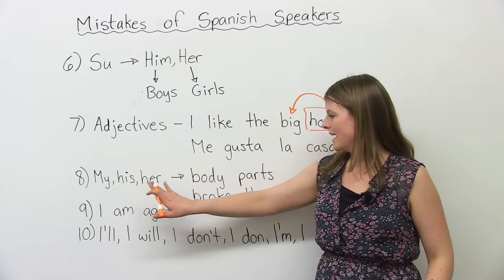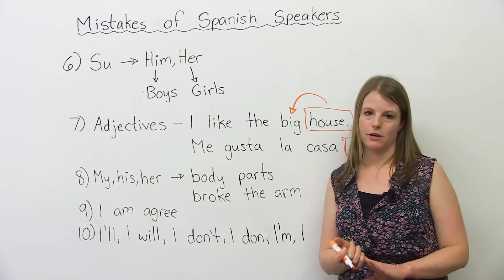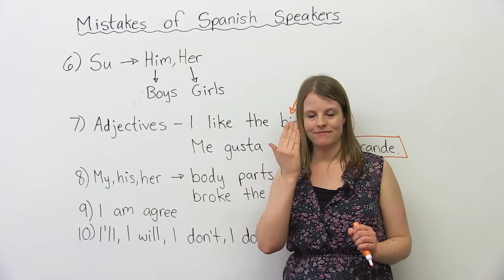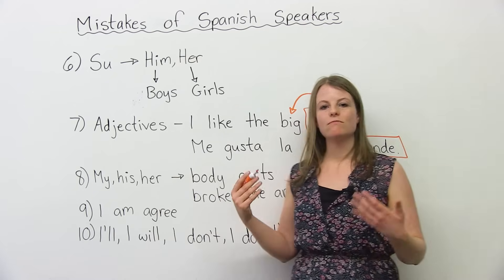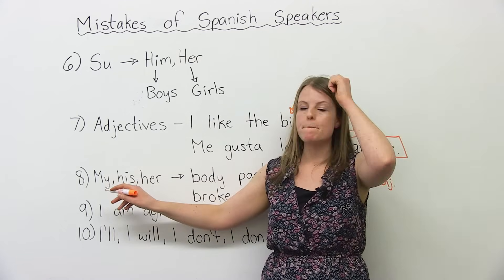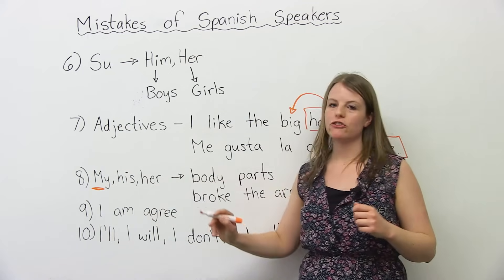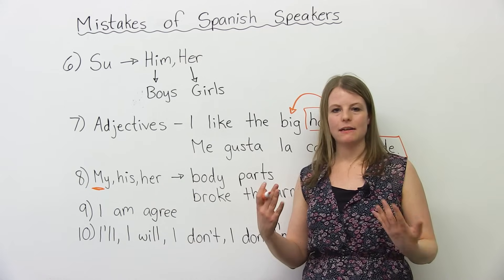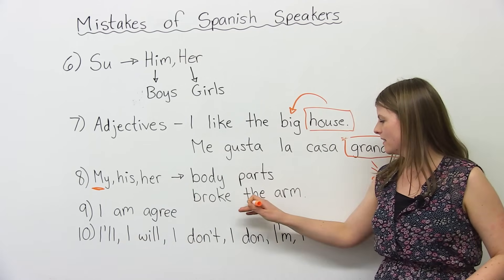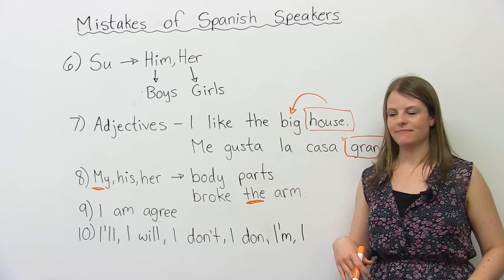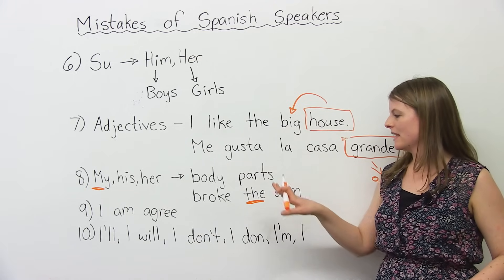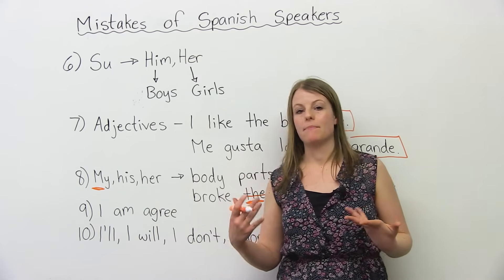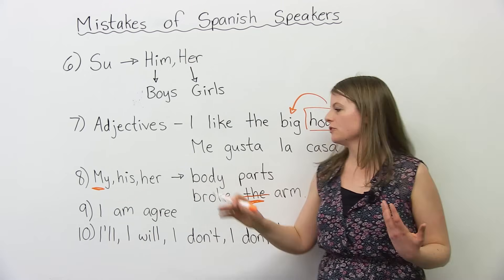Number eight: my, his, her — when talking about body parts. I've heard Spanish speakers say 'I brush the hair', 'I wash the face', 'I break the arm.' In English, you need to use a possessive: 'I brush my hair', 'he brushes his hair', 'she brushes her hair.' Same with 'I broke my arm', 'she broke her arm', 'he broke his arm.' When you're doing something to yourself, you can't use 'the' — you need to use my, his, or her.